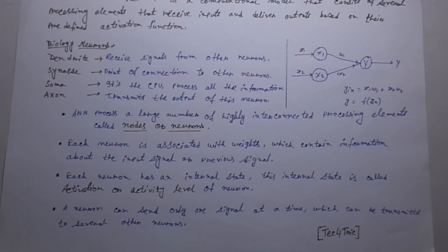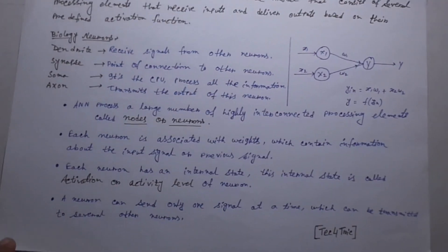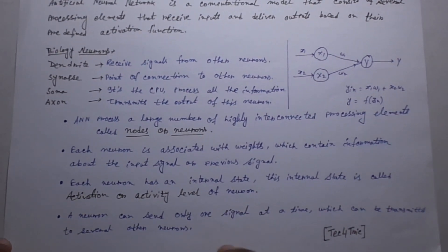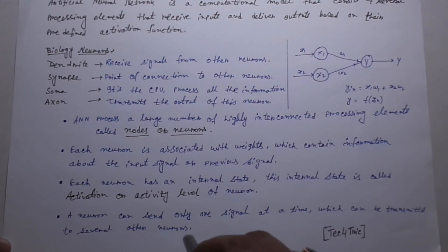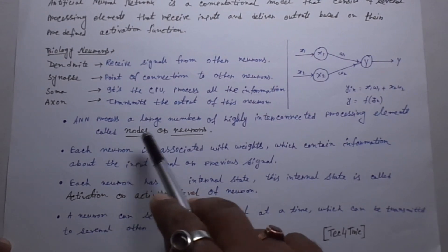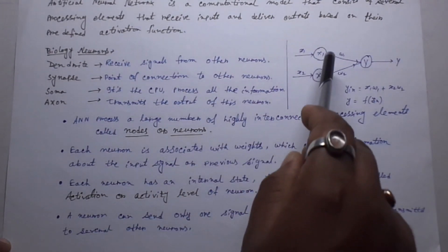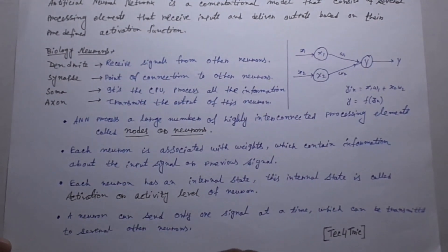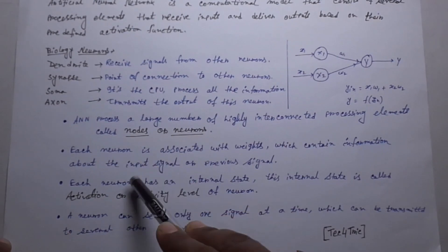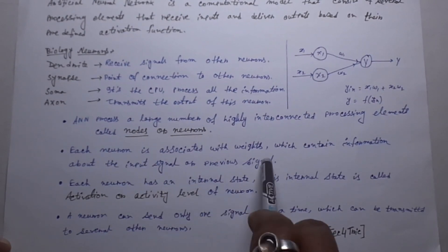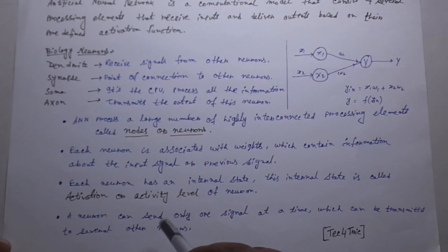Now let's see the artificial neural network in detail. So ANN processes a large number of highly interconnected processing elements called nodes or neurons. These are the nodes. Each neuron is associated with weights which contain information about the input signal or previous signal. This is a single layer network.